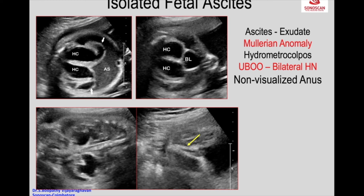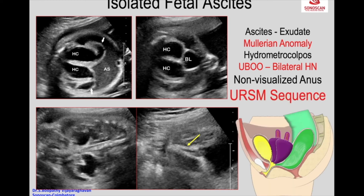This is a resolved case of meconium peritonitis and you see peritoneal calcifications. These are all features of URSM sequence — urorectal septal malformation sequence — where the urinary tract, genital tract, and gut open into a common chamber with one perineal opening and no anal opening, which can present as exudative ascites.